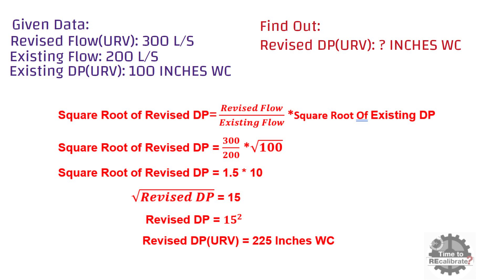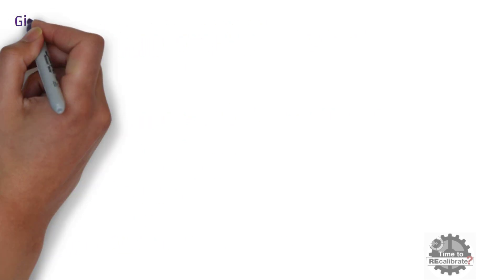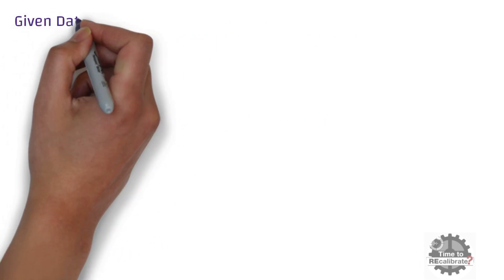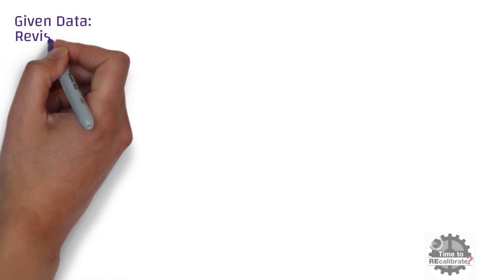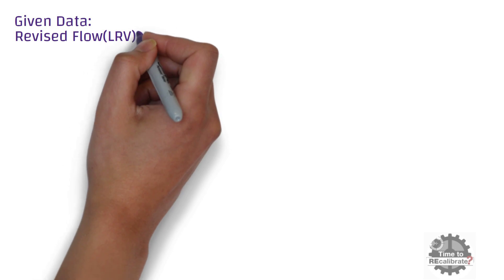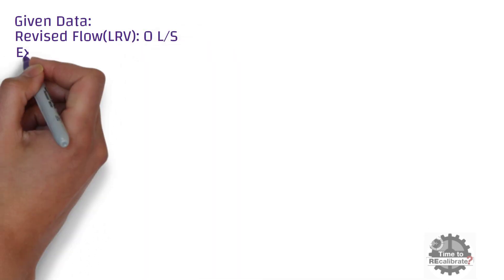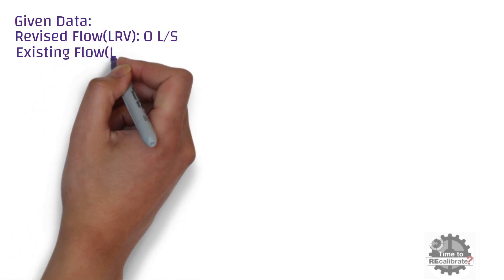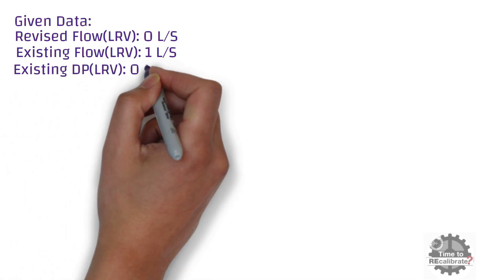Remember, this is only the upper range value of differential pressure; we still need to calculate the lower range of differential pressure. Let's write down the data for the lower differential pressure range. The revised flow lower range value is 0 liters per second, and the existing flow lower range value is 1 liter per second.